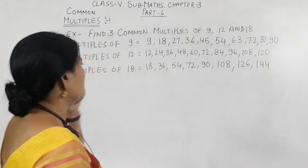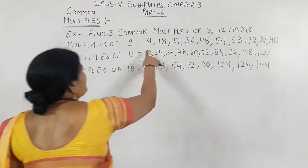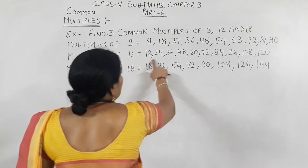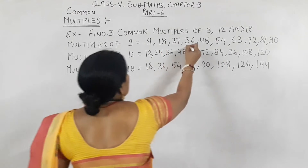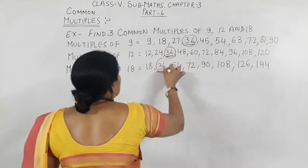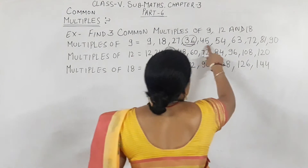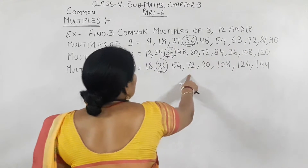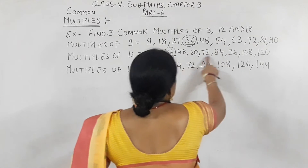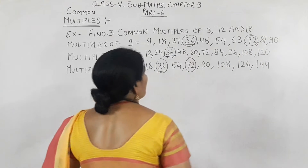Now, see — we are looking for common multiples of 9, 12, and 18. Which number is common in all three tables? Looking from the start, 36 appears in all three tables. So my first common multiple is 36 — I can make a circle around it. Next, 72 also appears in all three tables, so 72 is the second common multiple. Before 72, there is no other common multiple — 54 is in the 9 and 18 tables but not in the 12 table.